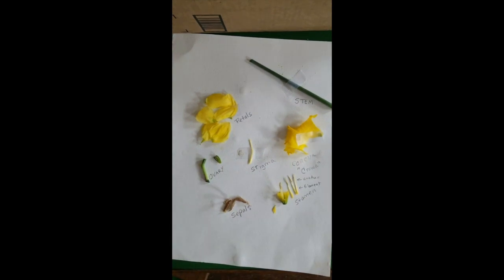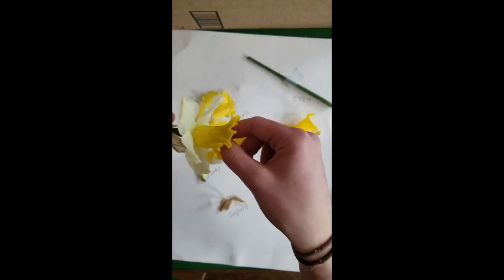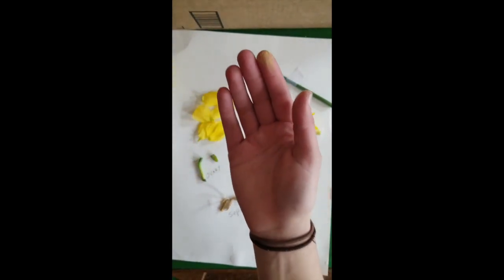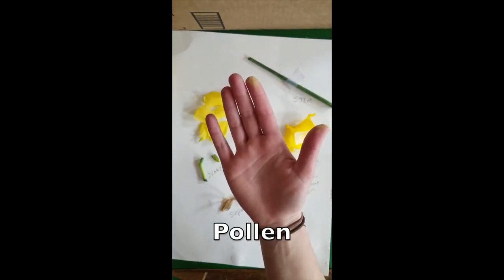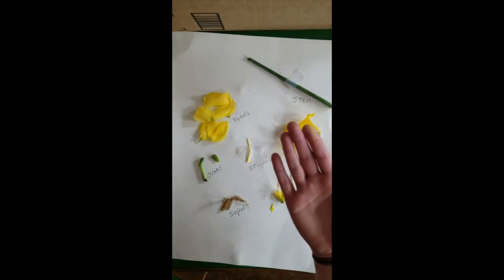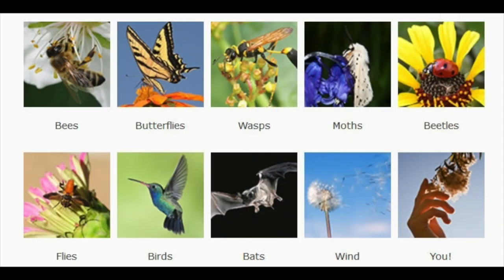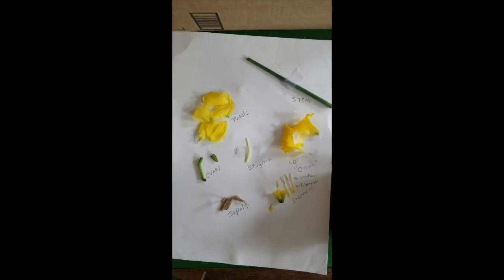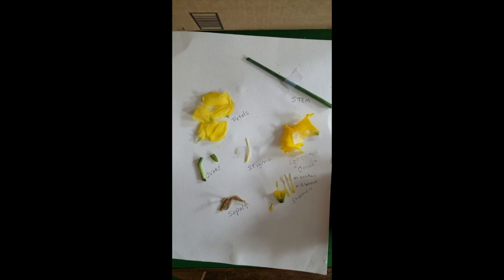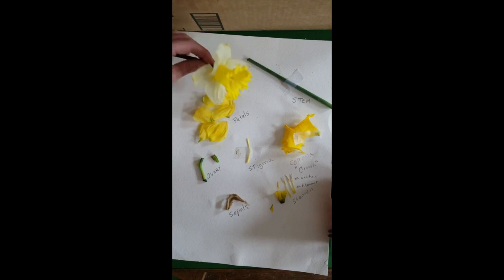One last thing you might notice is that my fingers are covered in this yellow dust. That yellow dust is the pollen — that is what makes this all work. The pollen is created by the flower and then brought from one flower to the other. That is why our pollinating insects are super important, because it would be very difficult for us as humans to transfer a tiny bit of pollen from one flower to the next. So grab that worksheet with all of the identifying labels, go find yourself a flower, and have some fun dissecting it. Thanks.